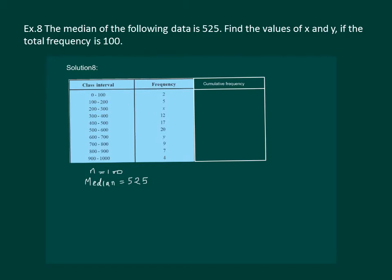Let us find the cumulative frequency. We have 2, 2 plus 5 is 7, 7 plus x, 7 plus x plus 12, that is 19 plus x, 19 plus x plus 17, 36 plus x, 36 plus x plus 20, 56 plus x.